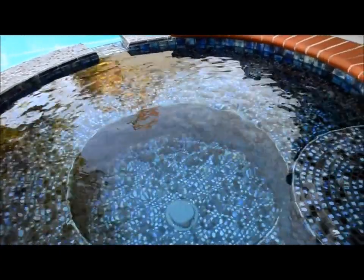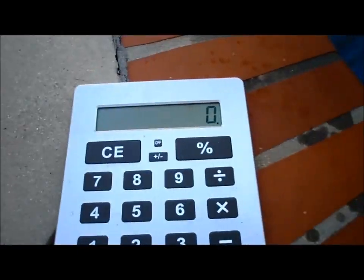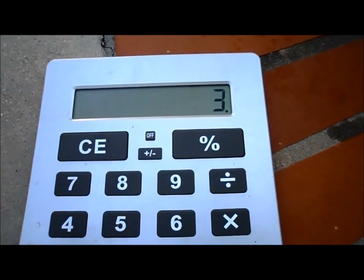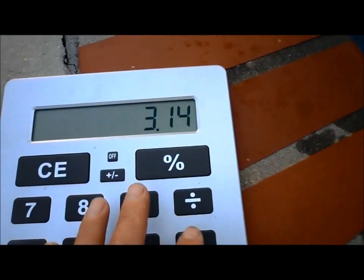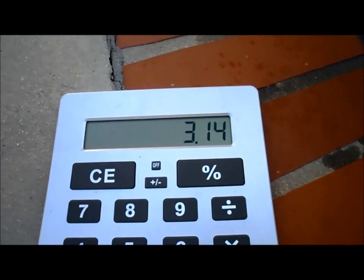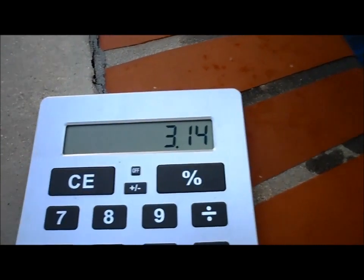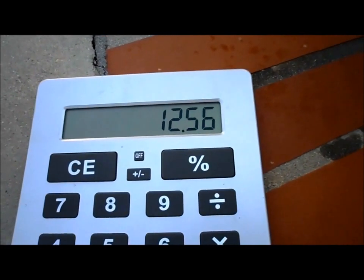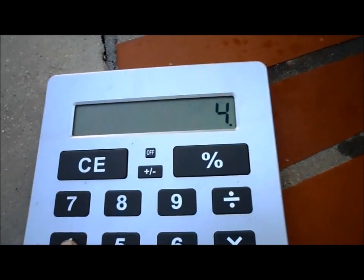So I'm going to go ahead and average that together. To calculate the square footage of a circular pool, you take pi, which is 3.14. You divide the diameter in half, so times 4, and that's 12.56. You times 4 again, which is 8 divided in half.